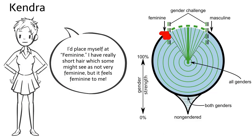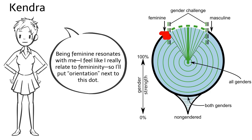I'd place myself at feminine. I have really short hair, which some might see as not very feminine, but it feels feminine to me. Being feminine resonates with me. I feel like I really relate to femininity, so I'll put orientation next to this dot.